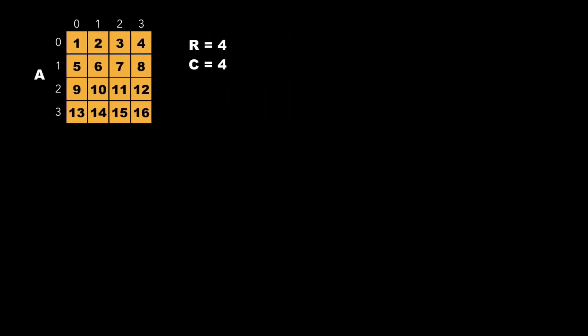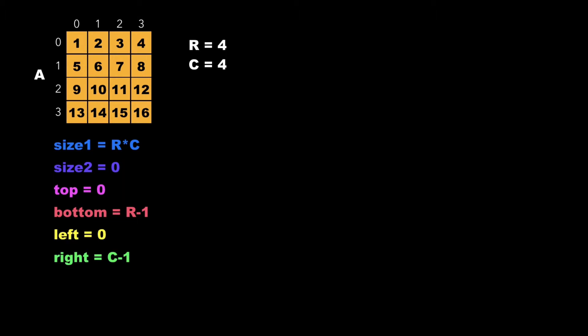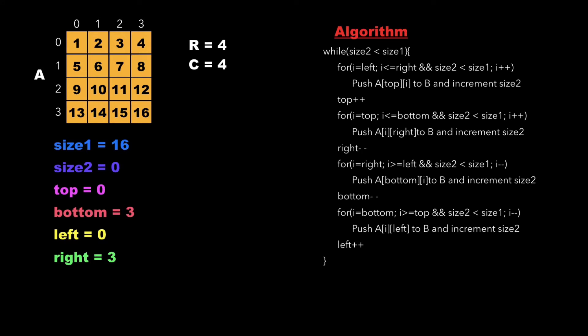Now let's have a look at the approach to solve this particular problem. Let's consider the same example where the matrix elements were from 1 to 16. We declare few variables namely size1 and size2 and initialize size1 to rows times columns and size2 to 0. We also declare few more variables namely top, bottom, left and right and initialize them appropriately. On the right side of the screen the algorithm first checks whether size2 is less than size1.